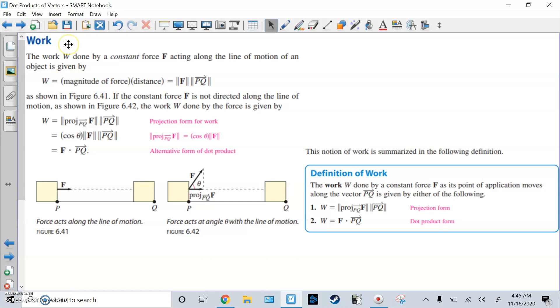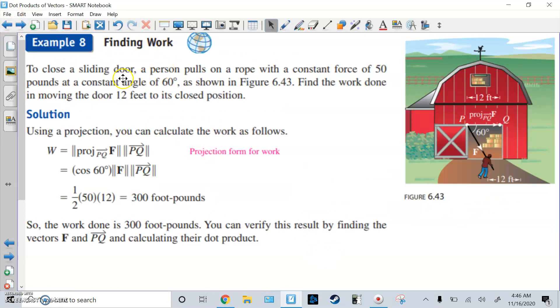All right. Last thing is work. Work done by constant force along line of motion is given by this. But if it's not along line of motion, if it's at a diagonal, you have a different formula. All right. So here are the two formulas in projection form and dot product form. We're going to use them. Here's the last problem. Finding work. So to close the sliding door, a person pulls a rope with a constant force of 50 pounds at a constant angle of 60 degrees. In this picture, find the work done, moving a door 12 feet to its closed position.